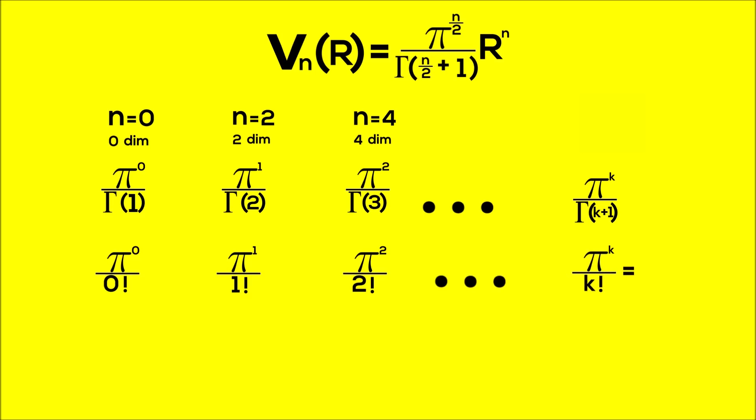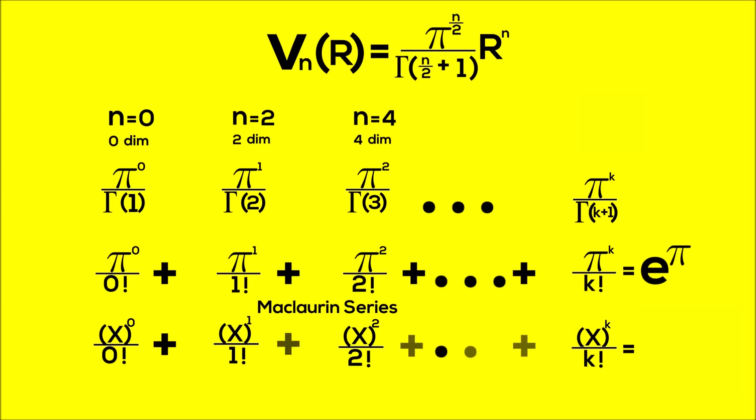The argument here is, again, that all of these values, or these volumes, add up to e to the pi. For anyone who knows what a McLaurin series is, you should be able to see the explanation already. But for those who don't, I'm just going to replace all those pi's with x's and graph this function.